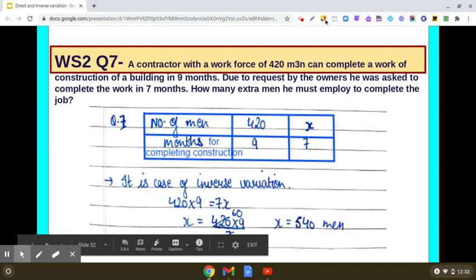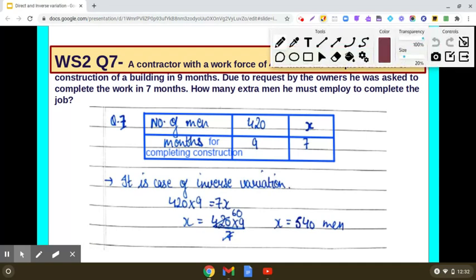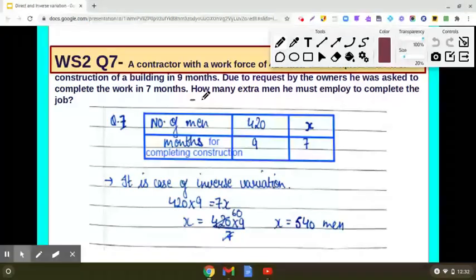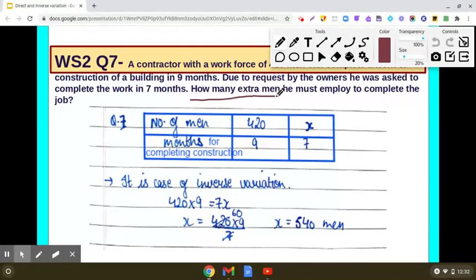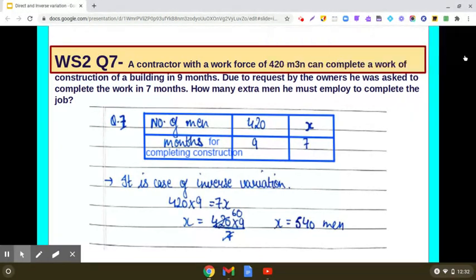But my dear students, you need to notice here, in this question, we don't have to just find the value of x. Rather, it is given that, just read the last statement: How many extra men he must employ to complete the job? So how many extra men we need to find out? Already 420 men were employed.